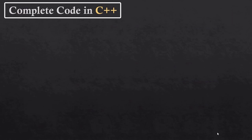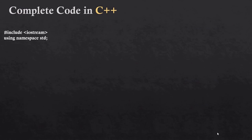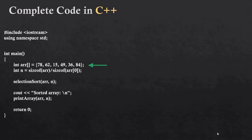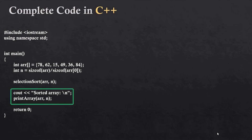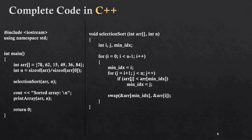Now let's see the complete code. We have initialized an array with 6 values. In n we have found the length of the array. Selection sort is the function in which we pass the array and its length, and at the end we display the array. In the function, the outer loop runs from i equal to 0 till n minus 1, and we set the minimum index to i. The inner loop starts from the next index till the last index, iterating the whole array.